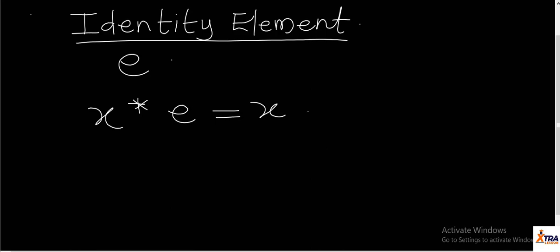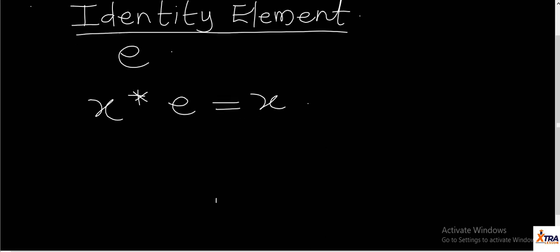It makes it look as if the original value is what we still get, and that is what the identity element does. The identity element is a very important property of binary operations, and we can actually determine the identity elements for various binary operations — at least the basic ones.